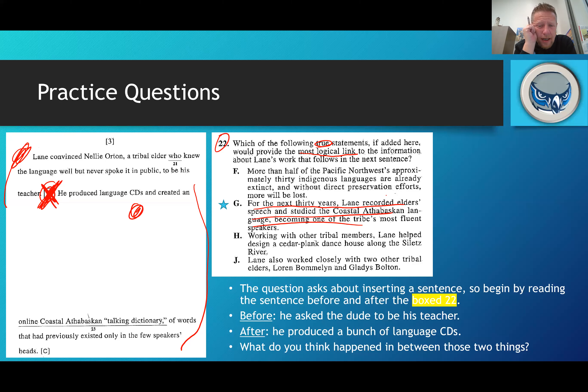And then finally J. Lane also worked closely with other tribal elders, Loren and Gladys. Listen, I'm sure Loren and Gladys are fine people, but this has nothing to do with the sentence beforehand or afterward. So the sentence G is appropriate.